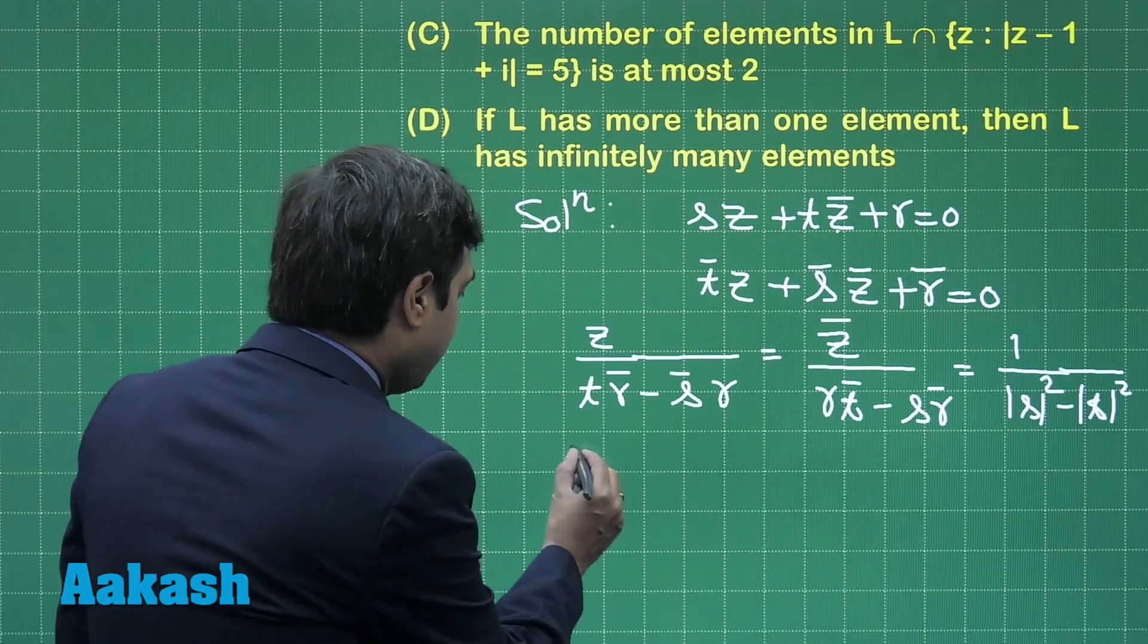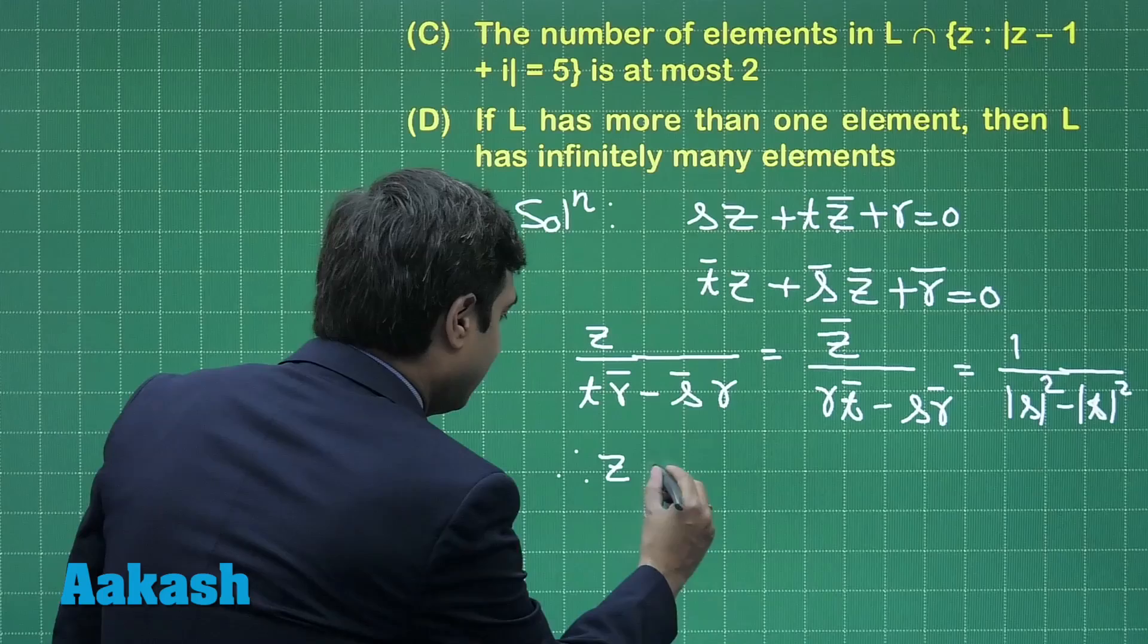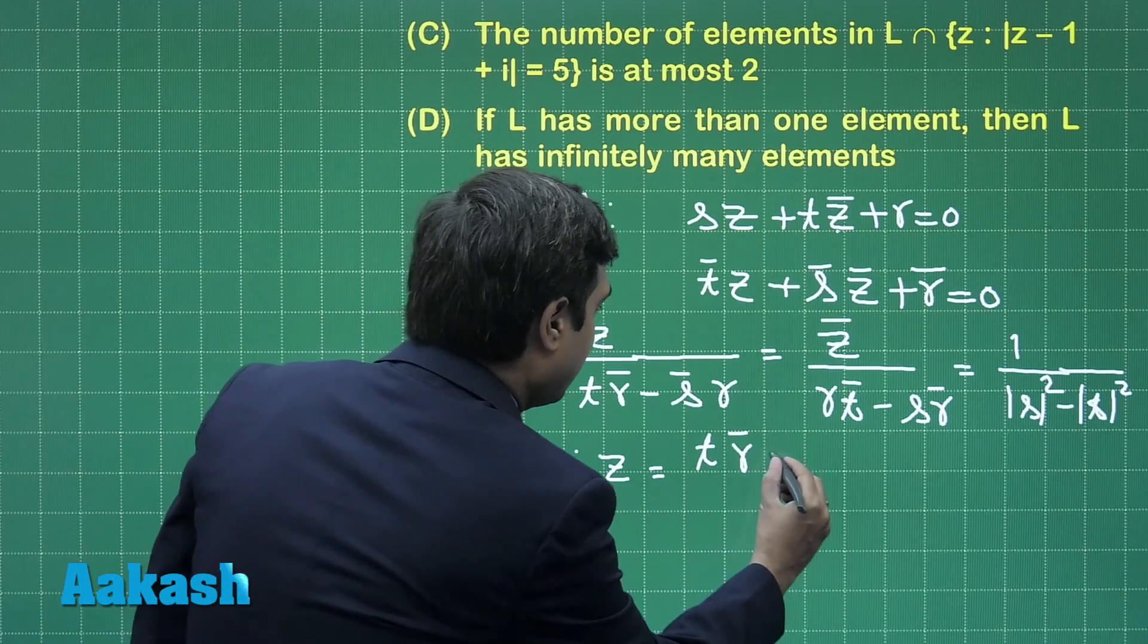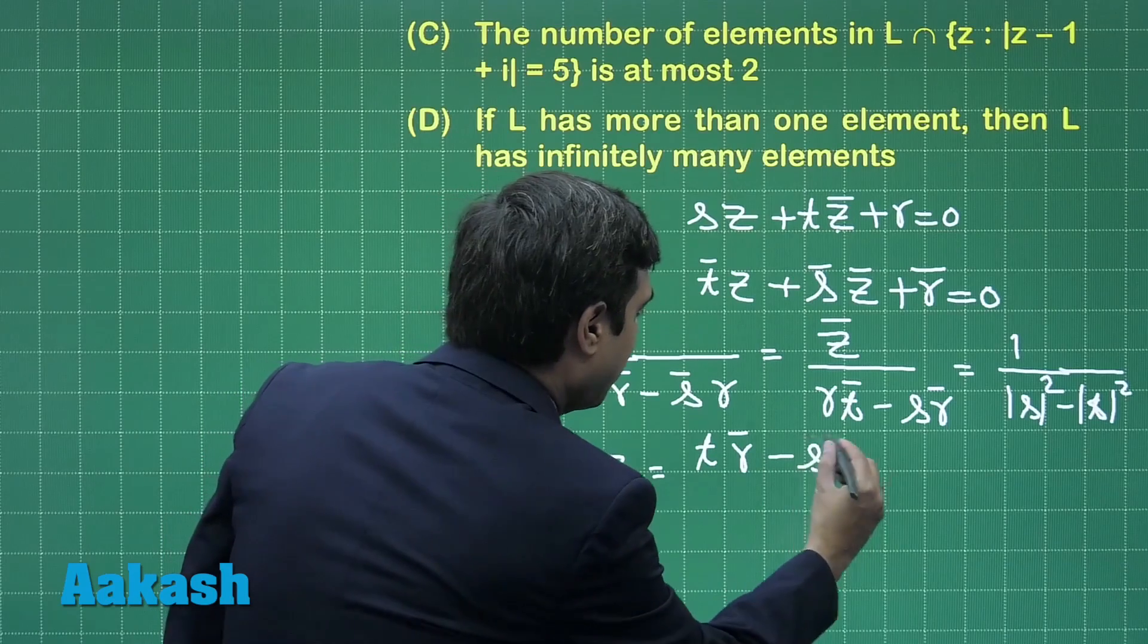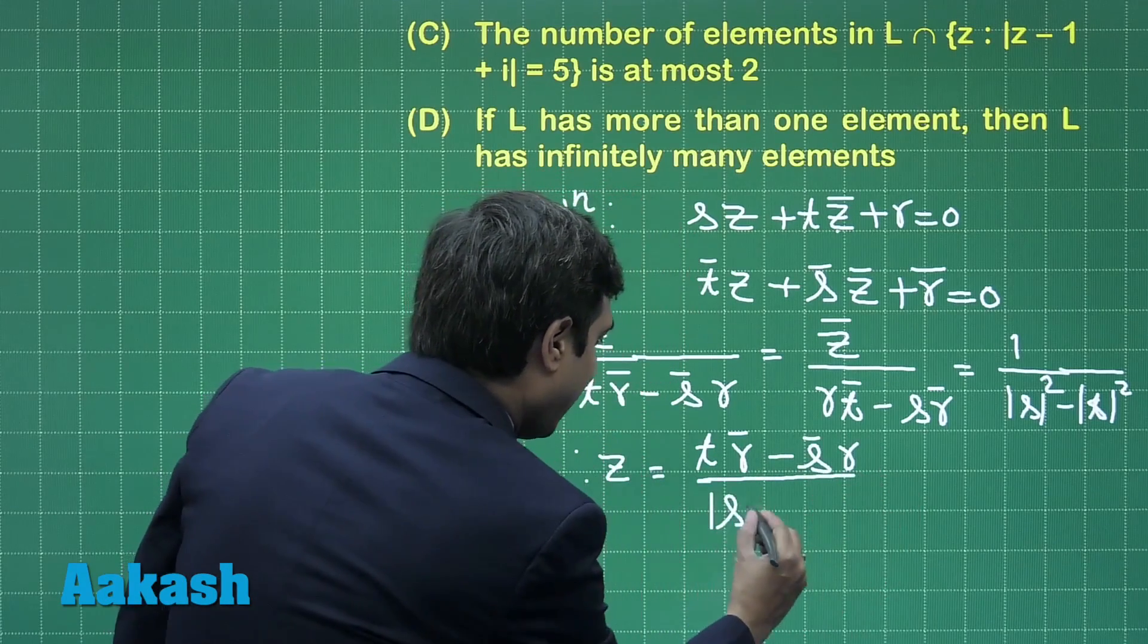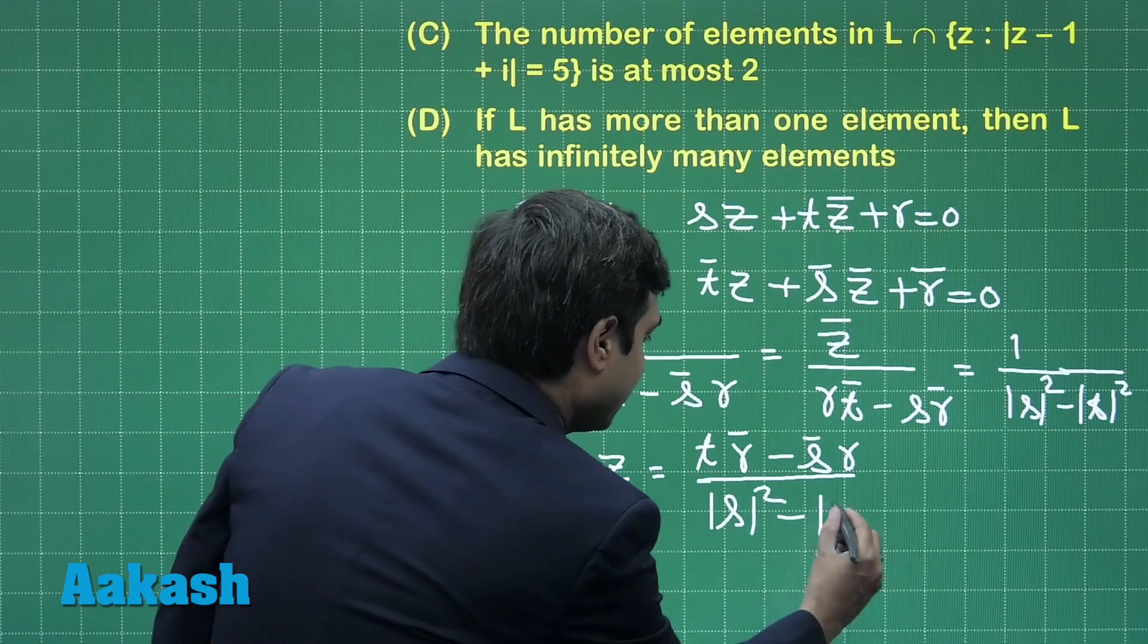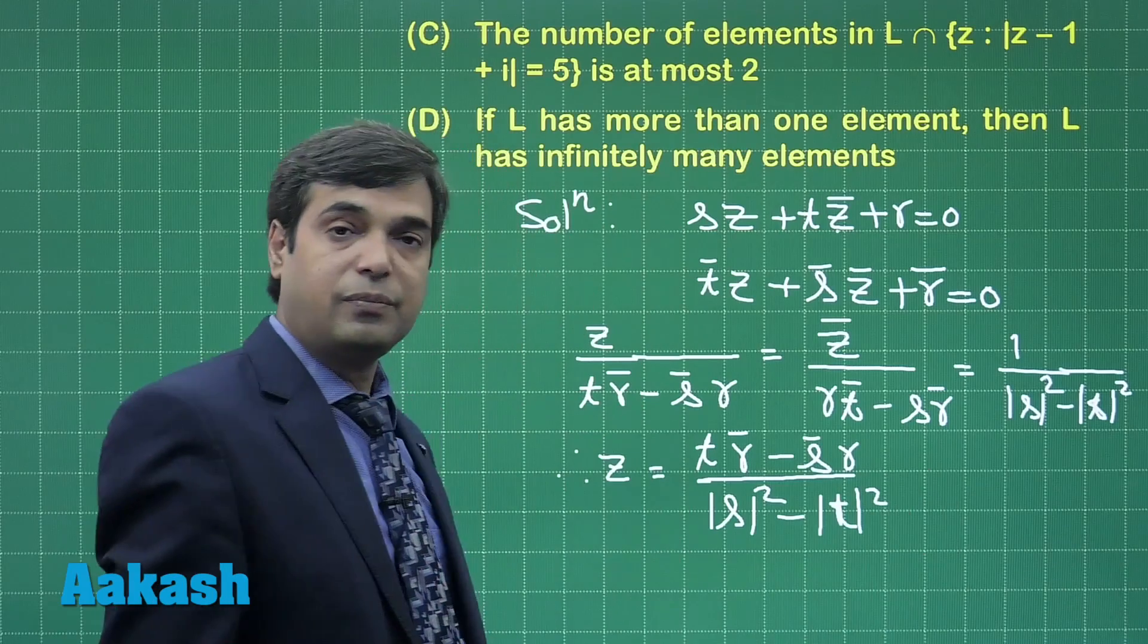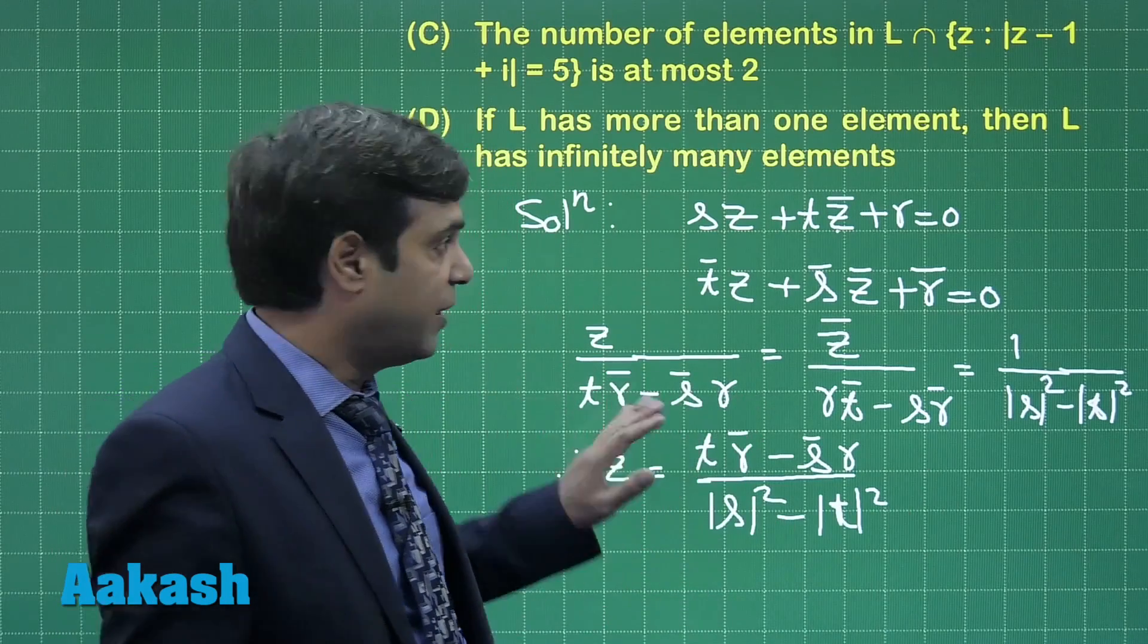From here we simply get z equals Tr̄ minus S̄r divided by |S|² minus |T|². This is clear. We obtained solution as this one. Now look at the options part.